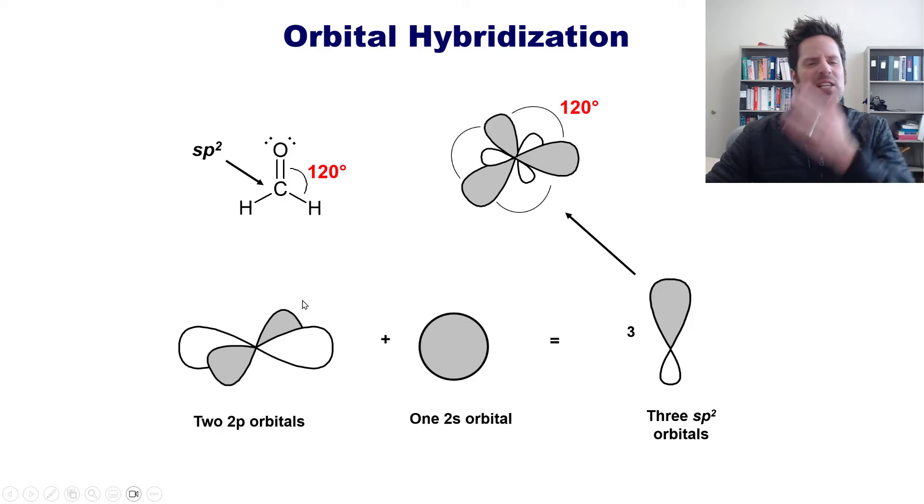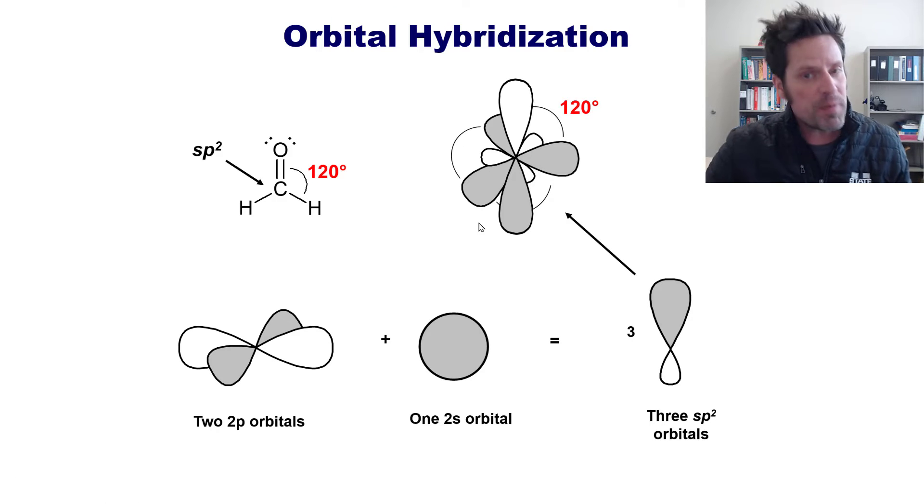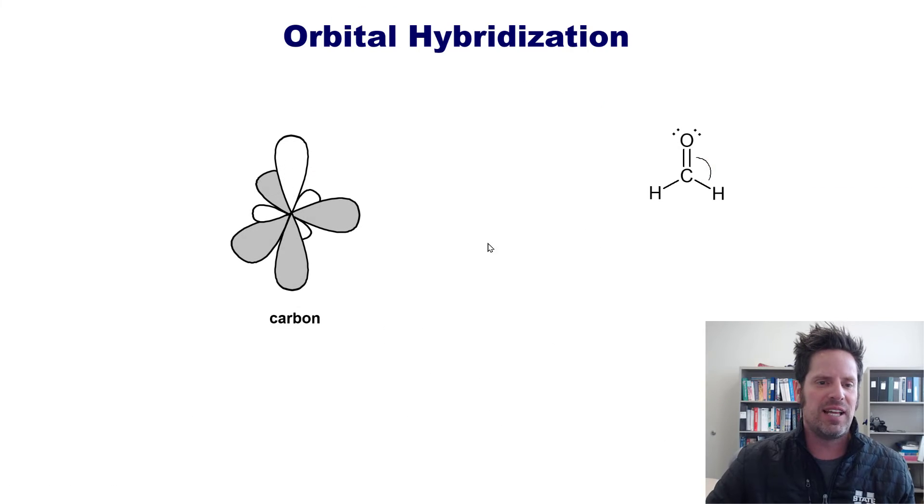You'll notice that in this process, the carbon only used two of its 2p orbitals, in this case the px and py. So what happened to its pz? Well, the pz orbital remains completely unused and goes straight up and down perpendicular to the plane of these sp2 orbitals right here. The carbon still has four valence electrons. It will place three of those into these sp2 orbitals and one of them up top into the remaining unhybridized p orbital.